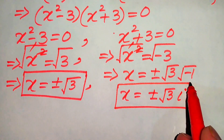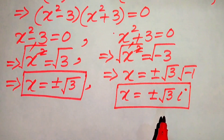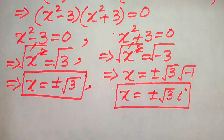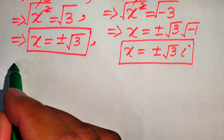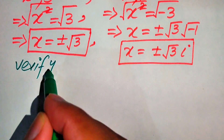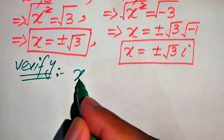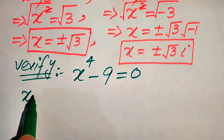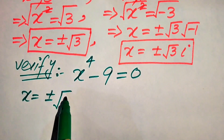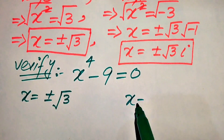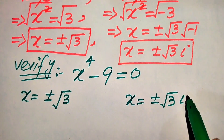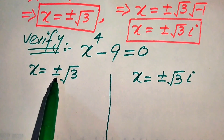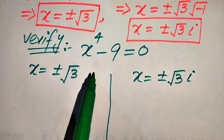These two values are complex values. Now in the next step we need to verify these roots — we check whether these roots satisfy the given equation or not. For verification, we copy down the given equation: x to the power of 4 minus 9 equals to 0. We verify the first root x equals to plus or minus square root of 3, and then the second root x equals to plus or minus square root of 3 times iota.